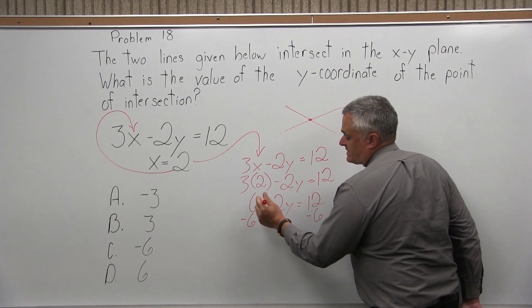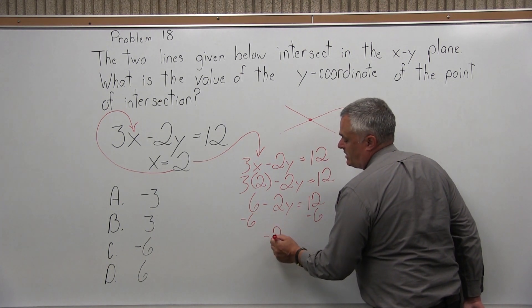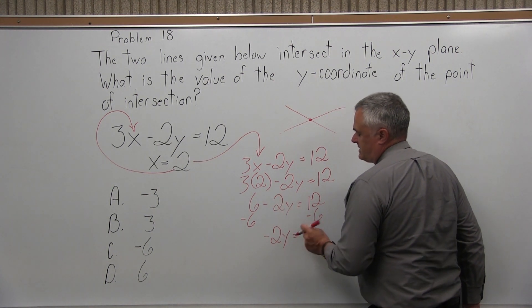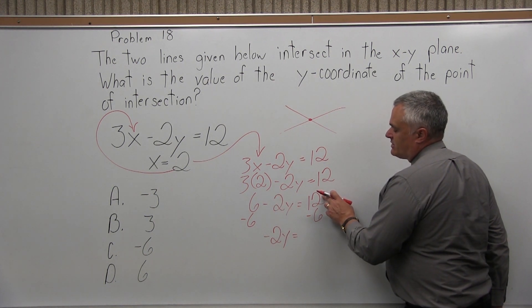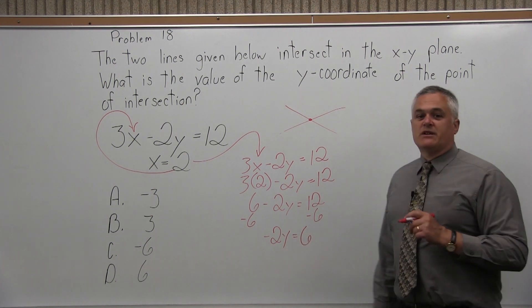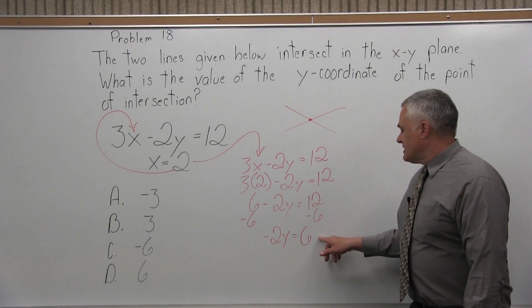On the left, positive 6, negative 6 cancel, leaving me with negative 2y on the left. Don't lose that negative. That will make a big difference. On the right side of the equals, I have positive 12, negative 6. Positive 12, negative 6 will be a positive 6.